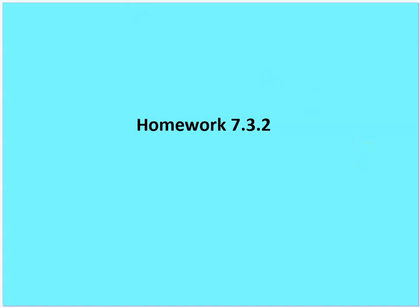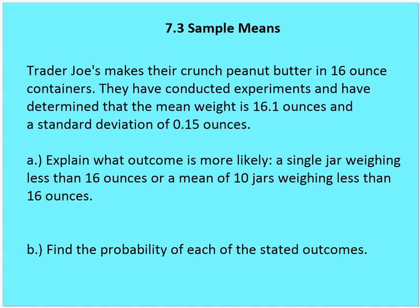This brings us to homework 7.3.2. Trader Joe's makes their crunchy peanut butter in 16-ounce containers. Experiments have determined that the mean weight is 16.1 ounces with a standard deviation of 0.15 ounces. Explain what outcome is more likely: a single jar weighing less than 16 ounces, or the mean of 10 jars weighing less than 16 ounces. Justify your claim by finding the probability of each outcome.